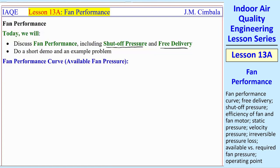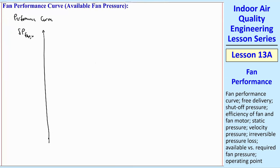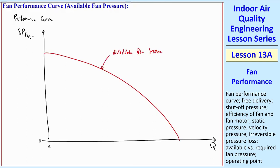This is similar to what I teach in fluids for pumps, except we call it shutoff head there — so this should be reviewed from your fluids class. A typical performance curve for a fan plots the pressure, delta P fan useful, as a function of flow rate Q. Generally, the fan performance curve starts high and goes down like a parabola. We call this the available fan pressure, because this is what the fan can actually deliver.